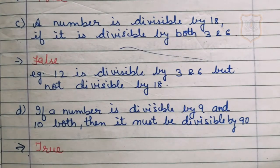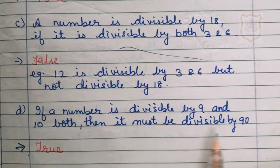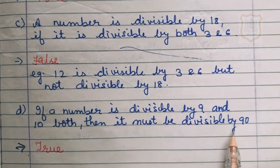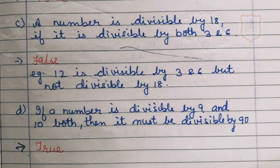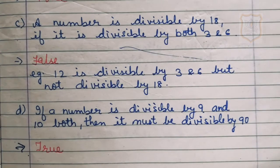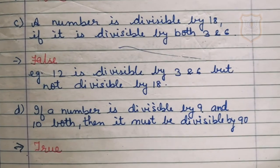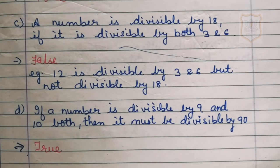Part D of question number 1: if a number is divisible by both 9 and 10, then it must be divisible by 90. The answer is true, because 9 and 10 are co-prime numbers. If any number is divisible by two co-prime numbers, then that number is also divisible by their product. So the statement is true.